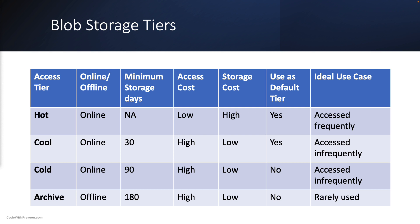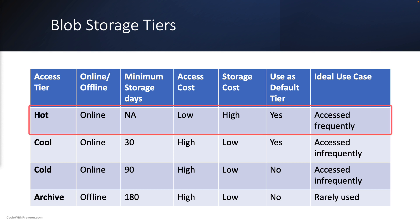The first tier is the hot access tier, which is ideal for frequently accessed or modified data. This has the highest storage cost but the lowest access cost, making it a great option for workloads requiring high-speed access. It is an online tier that can be used as a default tier.